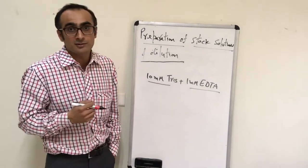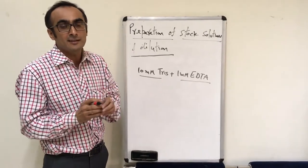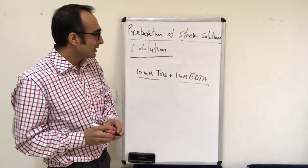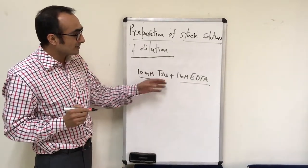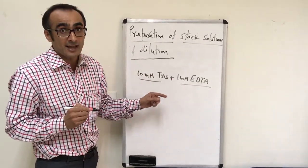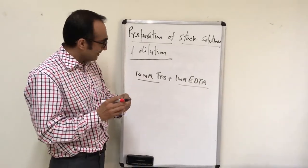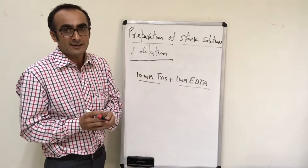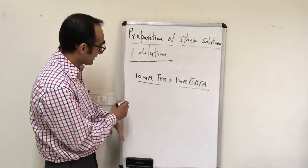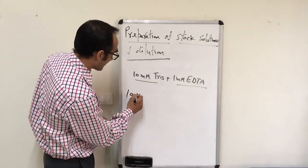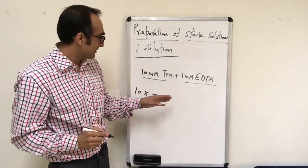To avoid that problem, the concept of a stock solution was introduced. It means that the solution you need in high volume, you prepare in a very concentrated manner. For example, if you have a 10 mM Tris and 1 mM EDTA buffer that you require in high volume, you multiply the concentration by some factor. If you want to prepare a 10X buffer of this composition, you prepare a 10X Tris-EDTA buffer, which includes 10 times the concentration of each individual component.